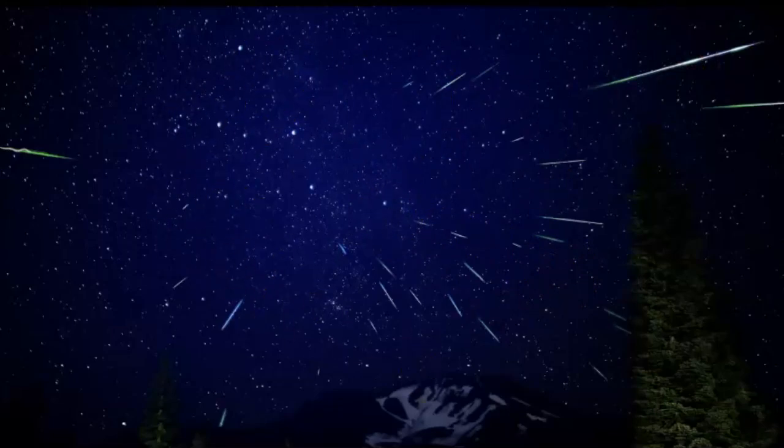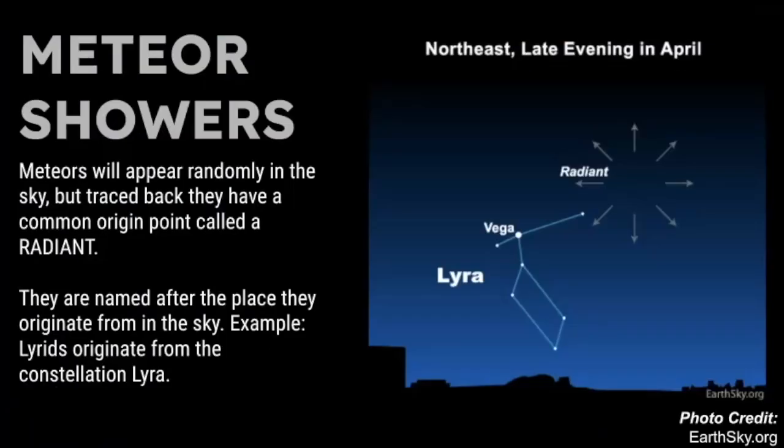This is because the particles are traveling in parallel paths at the same velocity, so they appear to the observer to radiate from a single point. I've got some pictures to further explain this. Here we have Lyra and the bright star in Lyra is Vega, and this is where the radiant is located. Remember, we name meteor showers after where the radiant appears to be, which constellation is it.